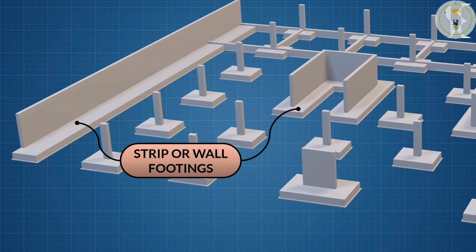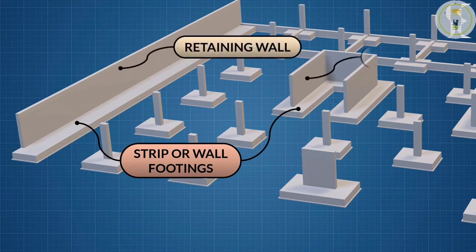A strip footing is provided for a load-bearing wall. A strip footing is also provided for a row of columns which are so closely spaced that their spread footings overlap or nearly touch each other. In such a case, it is more economical to provide a strip footing than to provide a number of spread footings in one line. A strip footing is also known as continuous footing.